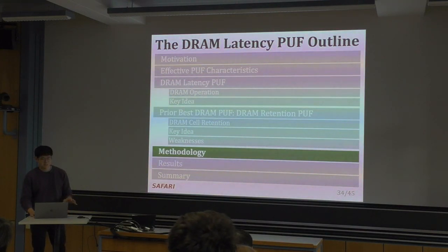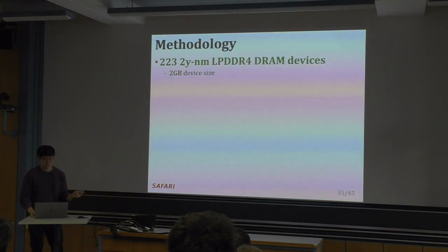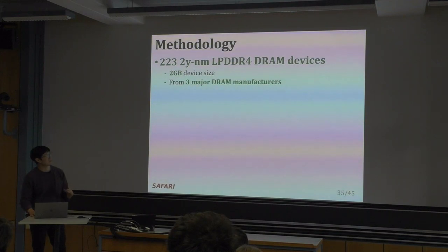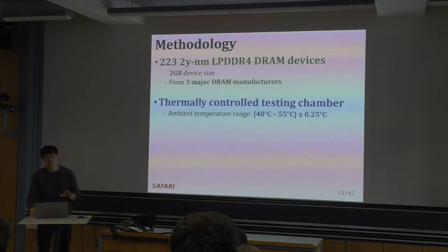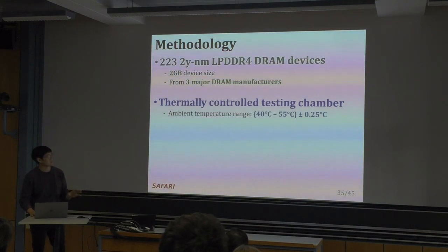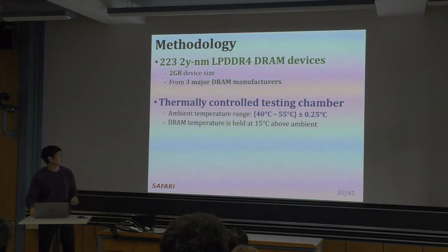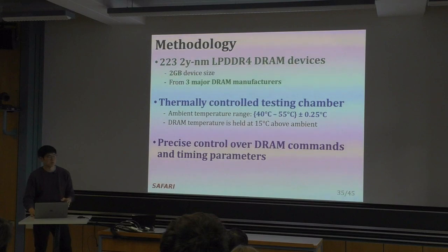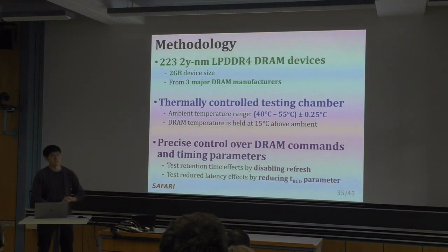For our evaluation, we tested LPDDR4 DRAM devices of 2GB from three major DRAM manufacturers, using a thermally controlled testing chamber with ambient temperature ranging from 40 to 55°C with precise temperature control, holding DRAM temperature at 15°C above ambient. We had precise control over DRAM commands and timing parameters, testing retention time by disabling refresh and testing reduced-latency access by reducing the TRCD timing parameter.